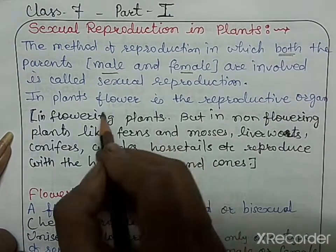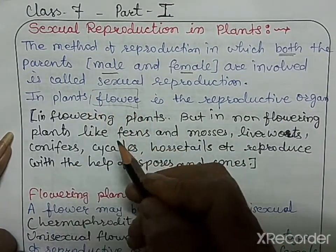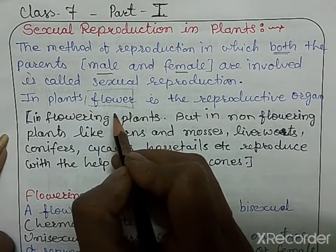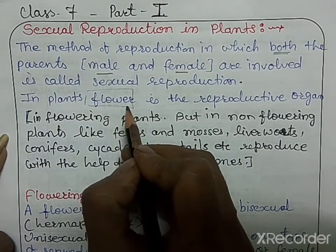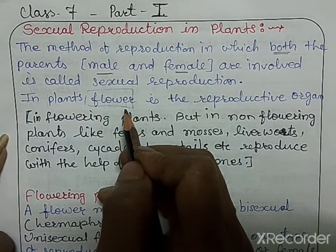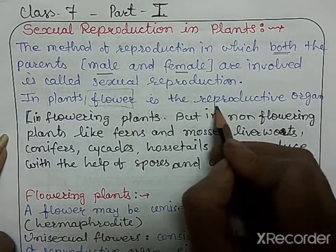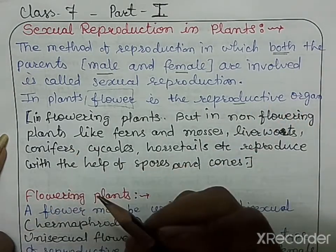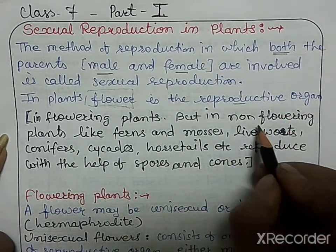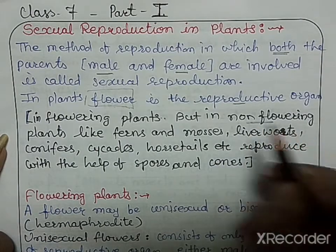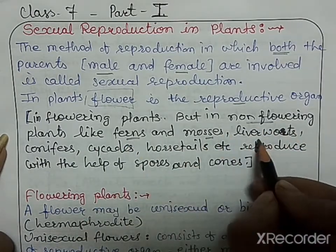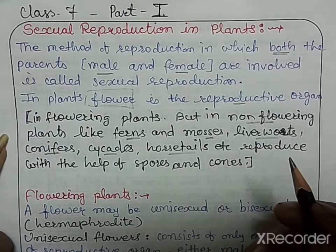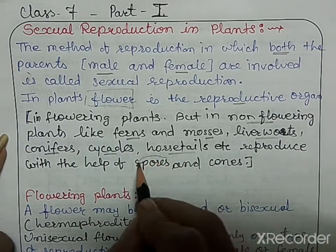In flowering plants, the flower is the reproductive organ. There are two groups of plants: flowering plants and non-flowering plants. Flowering plants have flowers as their reproductive organs. Non-flowering plants like ferns, mosses, liverworts, conifers, cycads, and horsetails reproduce with the help of spores and cones.